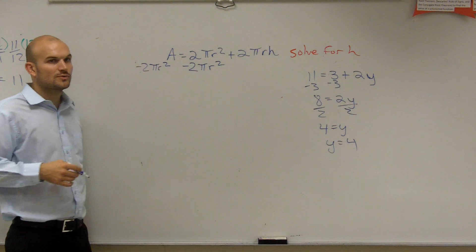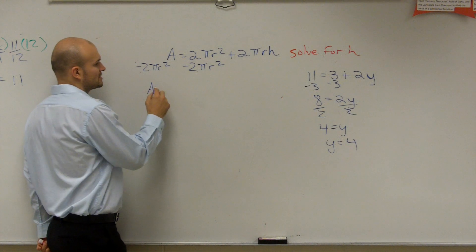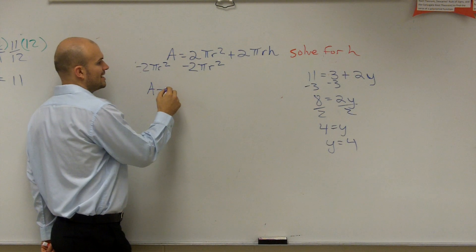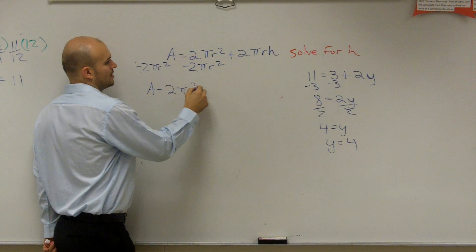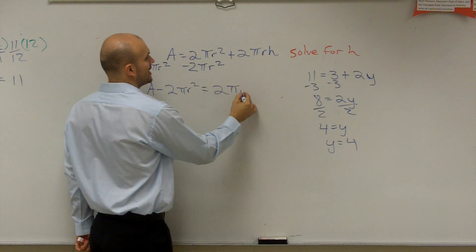A minus 2 pi r squared, you can't combine them. They're not like terms. So we're just going to leave it as A minus 2 pi r squared equals what's left over? 2 pi r h.